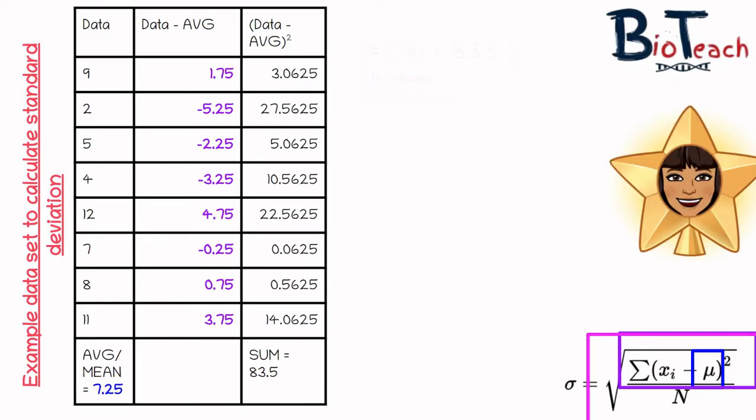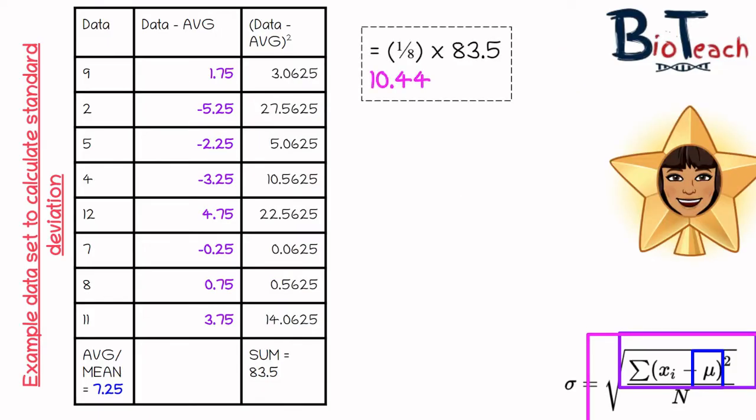After that step, I'm looking at how to work out the variance. In order to work out the variance, I have to do 1 divided by the sample size — in this case the sample size is 8 — so I do 1 divided by 8 and multiply that by the sum of what I've just worked out in the previous step.